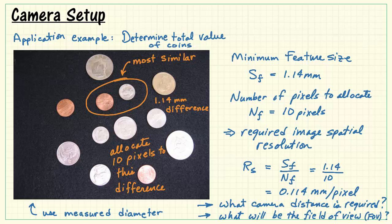We have a basic tradeoff here where better image spatial resolution, which makes it easier to differentiate the penny and the dime, means we can't see as many coins. So we need to establish a balance between resolution and field of view.